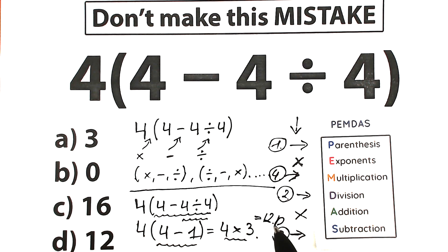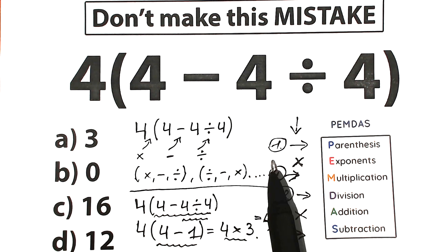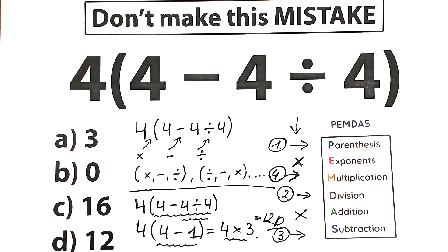Definitely don't feel bad if you got this wrong — maybe you solved this challenge another way. Write your suggestion into the comment section: how did you solve this challenge, what is your answer? Because a lot of countries use different orders of operations. According to the most popular order of operations, the correct answer is D — 12.